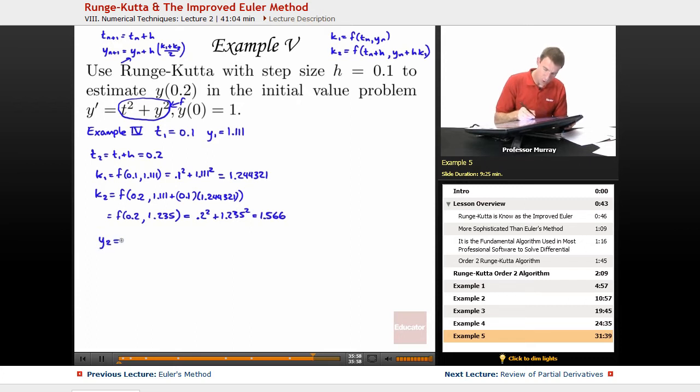Find myself a y2 is y1 plus h times (k1 plus k2) over 2. And so my y1, where'd that go? That's 1.111.